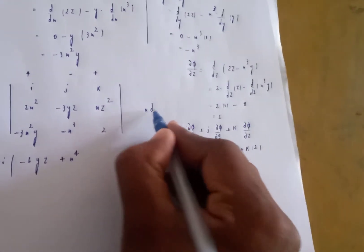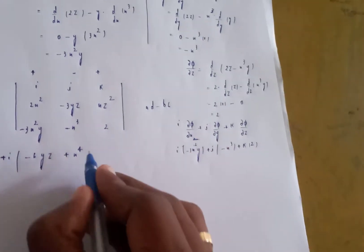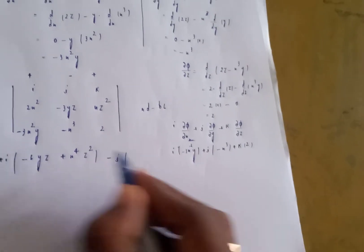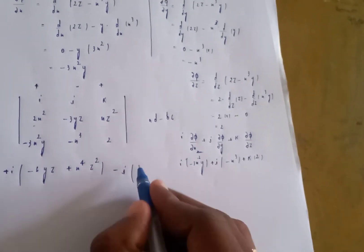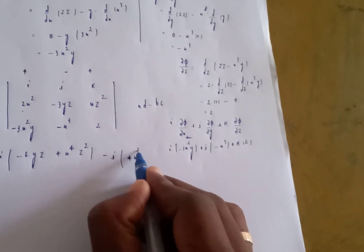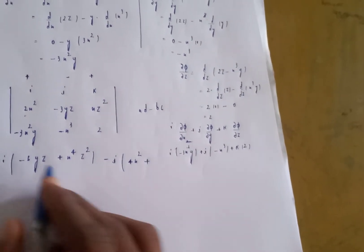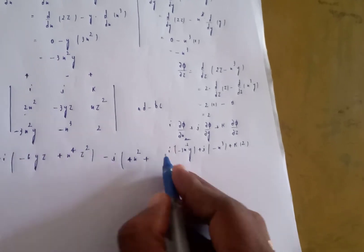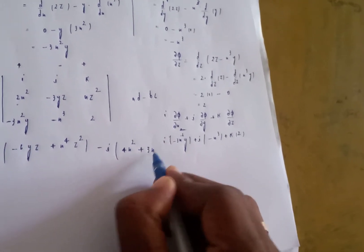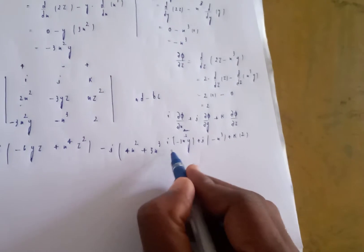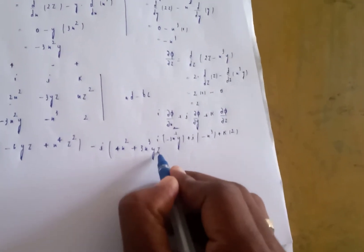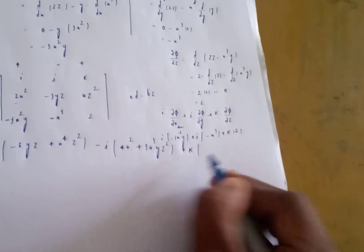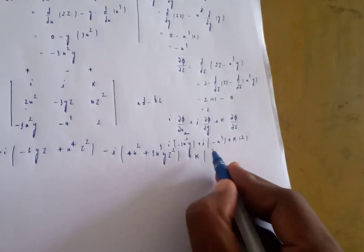Expanding the cross product determinant: i component gives xz² times 2 minus (minus 3yz) times (minus x³). The j component gives: minus of (2x² times 2 minus xz² times (minus 3x²y)), giving minus 4x square. The k component is computed next.